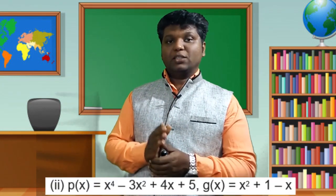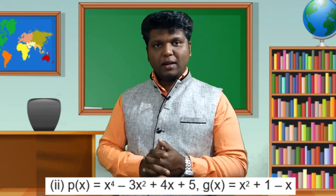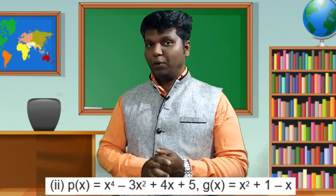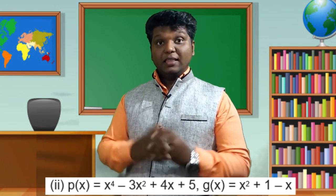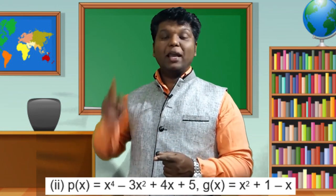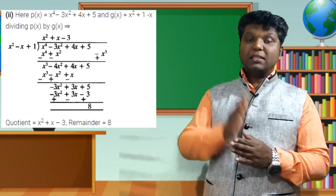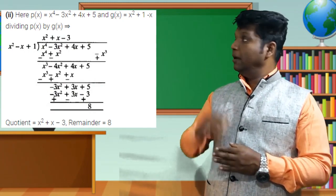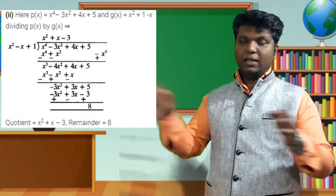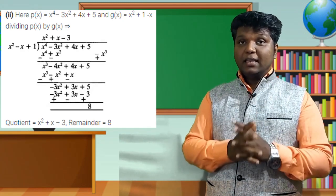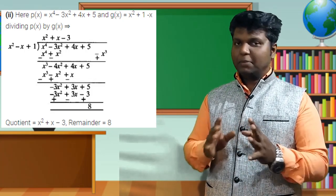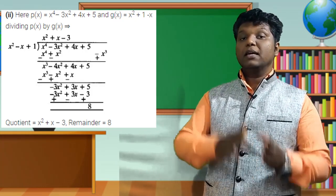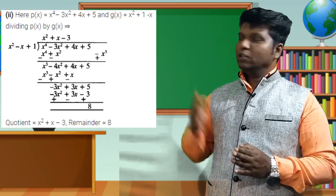Second question: p(x) = x⁴ − 3x² + 4x + 5. The x³ term is missing, so introduce 0x³: write x⁴ + 0x³ − 3x² + 4x + 5. The divisor g(x) = x² + 1 − x is not in order — rearrange to x² − x + 1.